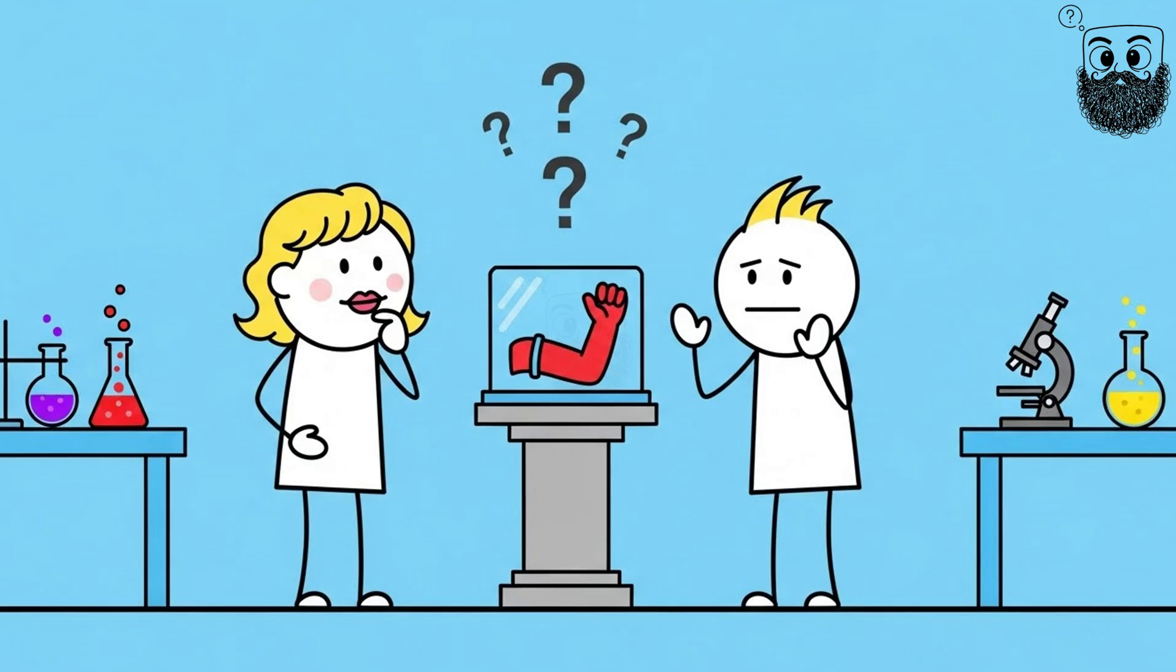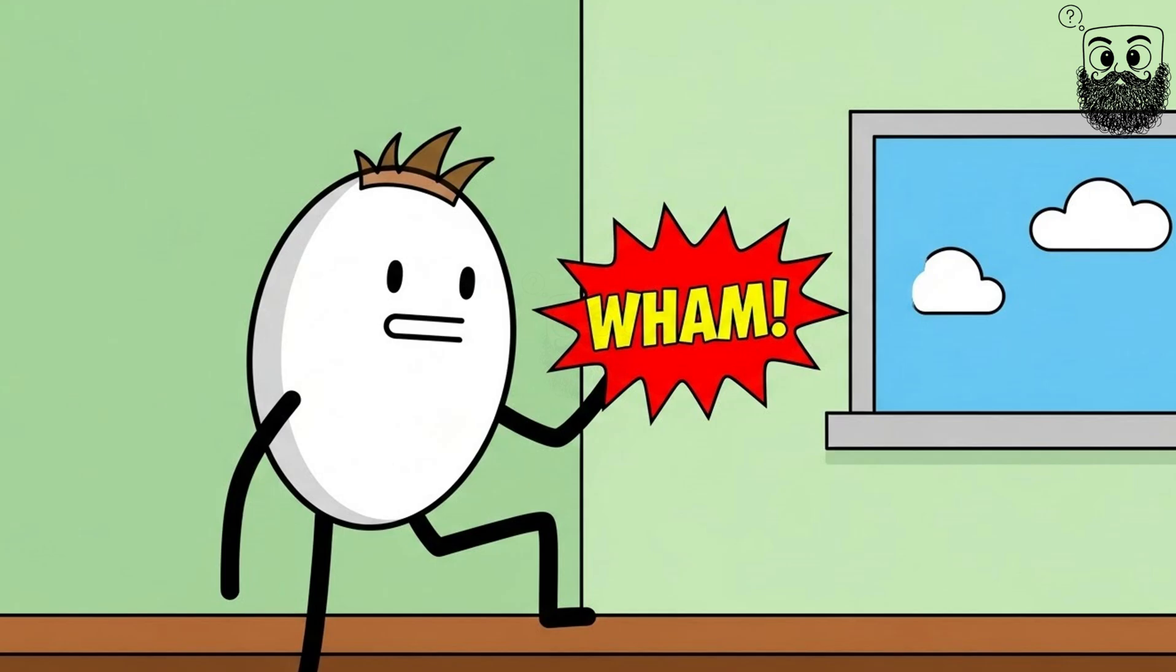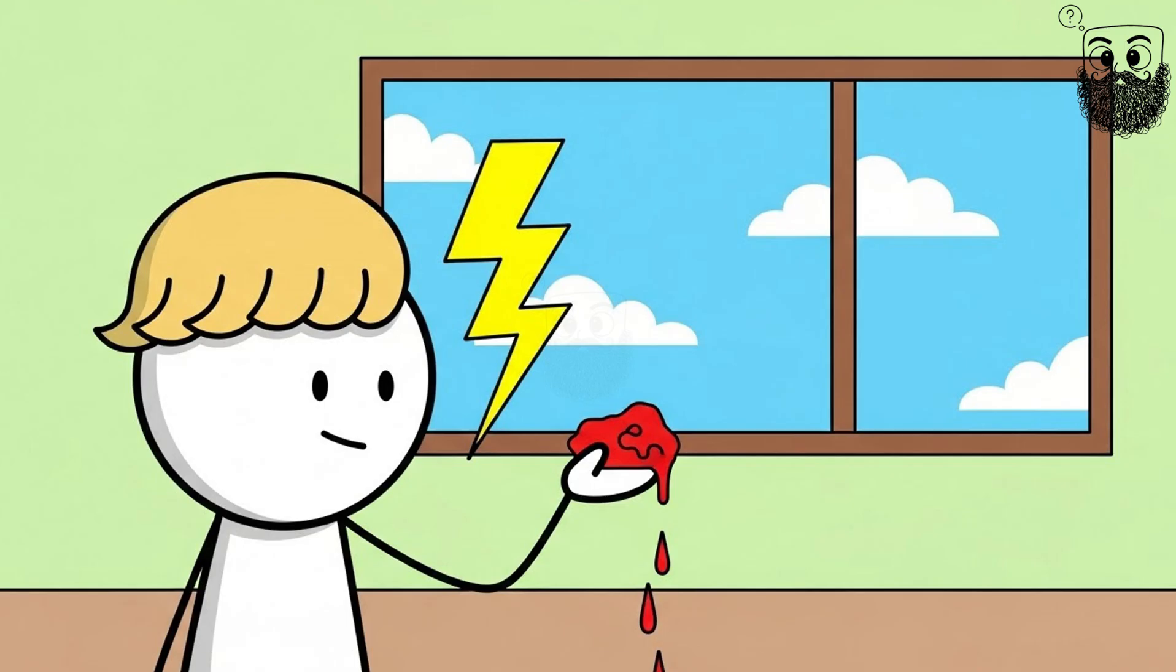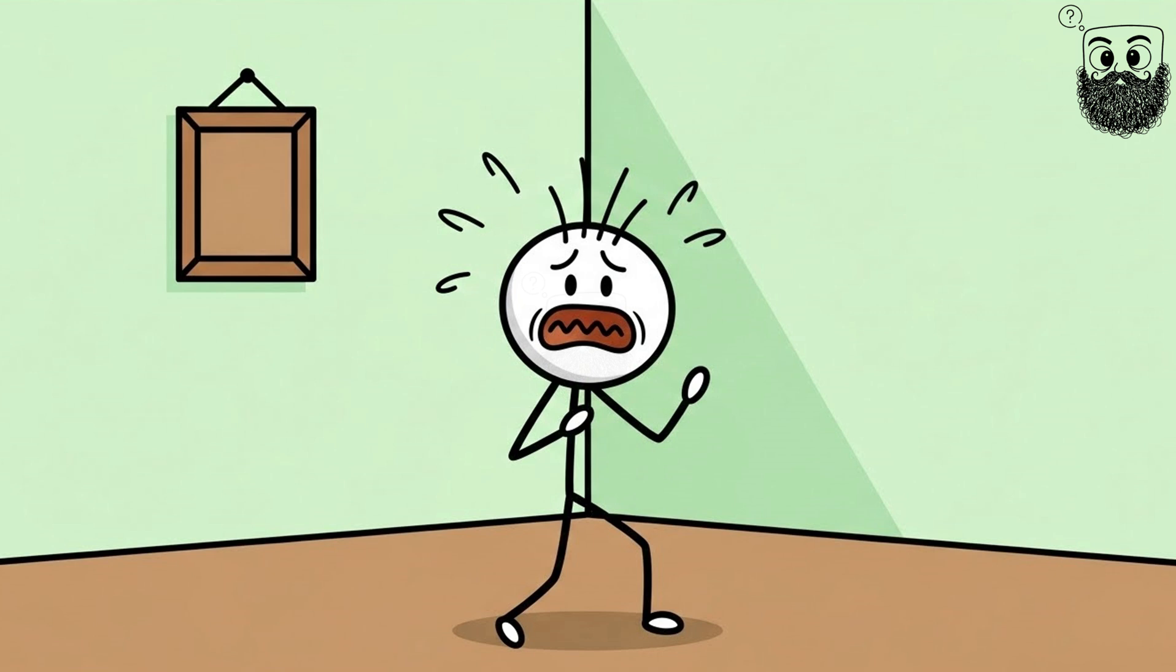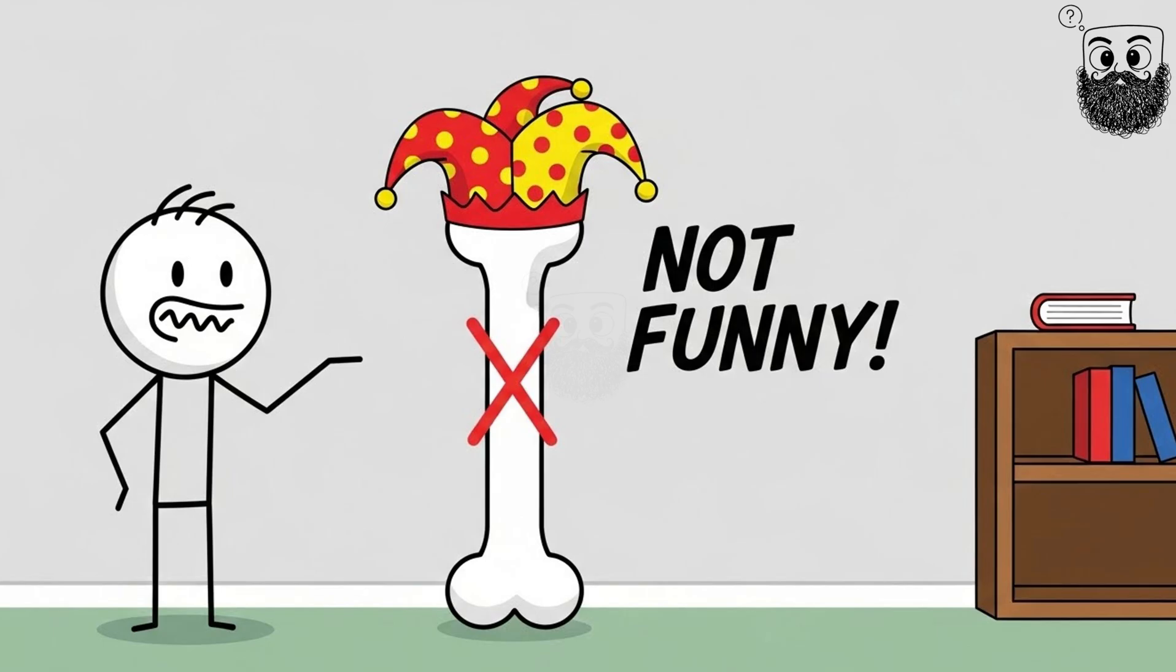4. Funny Bone. You bang your elbow just right and wham! A weird electric shock shoots down your arm straight into your pinky and ring finger. It's not painful like a normal bump, but it's this intensely awful tingling that makes you want to shake your arm like a madman. Everyone calls it your funny bone. But here's the thing. It's not a bone, and it's definitely not funny.